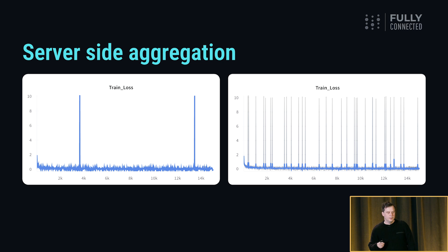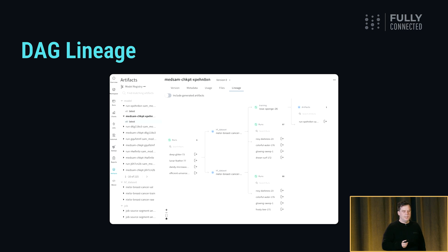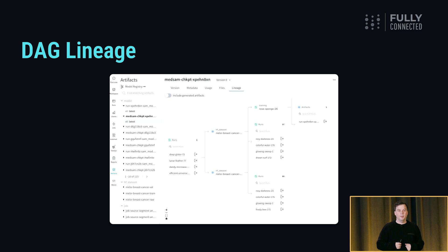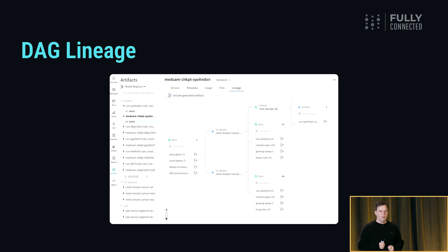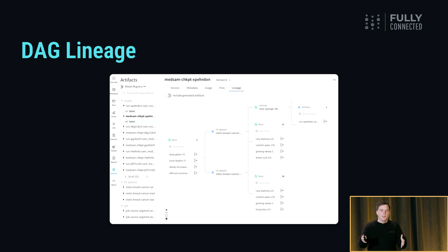Another huge scaling improvement is within our data lineage system. When we built it out, we just didn't imagine the scale of datasets customers would want to track or the number of evaluations against a single run. This required a back-end change just to load the graph into the browser, but more importantly it forced us to rethink visualizations in the UI to make it possible to look through millions of things in a directed graph. We feel we have the best and most scalable data lineage tracking system for ML.